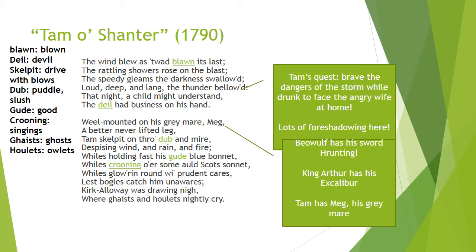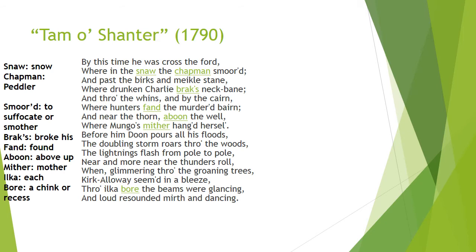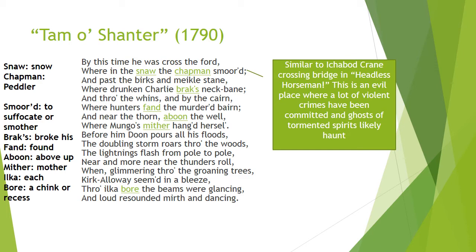There's lots of foreshadowing here with the ghosts and owls crying. This part reminds me of Ichabod Crane crossing the bridge in The Headless Horseman — a place of evil where a lot of violent crimes have been committed, giving you the feeling that ghosts of tormented spirits are haunting it. A dangerous place where bad things could happen: this is where Charlie broke his neck, the hunters found a murdered child, and Mungo's mother hanged herself.